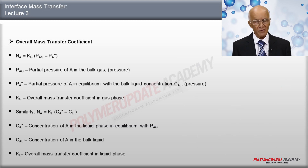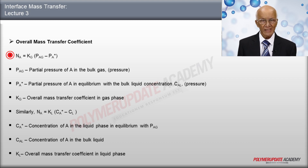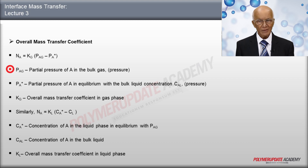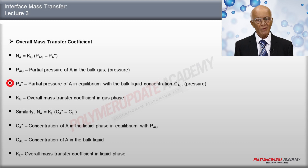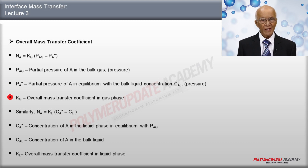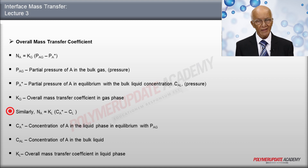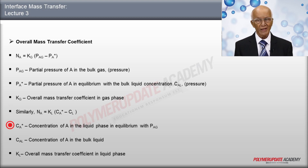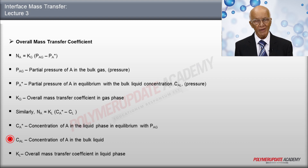We define two overall mass transfer terms: Na equals Kg times (Pag minus Pag*), where Pag is the partial pressure of A in the bulk gas phase, Pag* is the partial pressure of A in equilibrium with the bulk liquid concentration CAl, and Kg is the overall mass transfer coefficient in the gas phase. Similarly, Na equals KL times (CA* minus CAl), where CA* is the concentration of A in the liquid phase in equilibrium with Pag, CAl is the concentration of A in the bulk liquid, and capital KL is the overall mass transfer coefficient in the liquid phase.